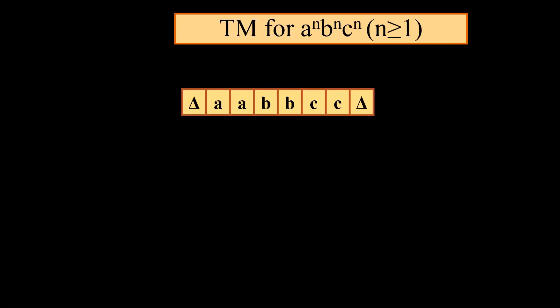So now we will discuss how we will draw a Turing machine for Aⁿ Bⁿ Cⁿ. For example, if I have input on the tape of double A followed by double B followed by double C, my tape will start reading from the first input, that is A. Whenever it comes across the first A, it should start searching for the first B and then the first C, so that the number of A equals the number of B, which further equals the number of C. Likewise, second A, second B, and second C.